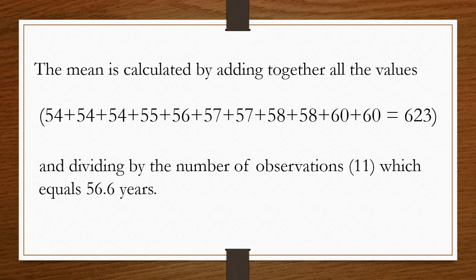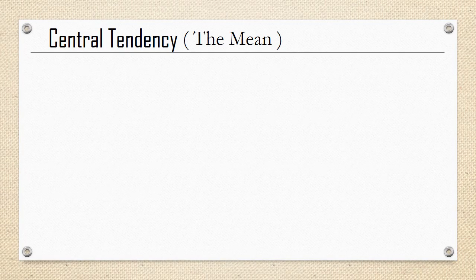The mean is calculated by adding together all the values: 54 plus 54 plus 54 plus 55 plus 56 plus 57 plus 57 plus 58 plus 58 plus 60 plus 60 equals 623, and dividing by the number of observations, which is 11, which equals 56.6 years.